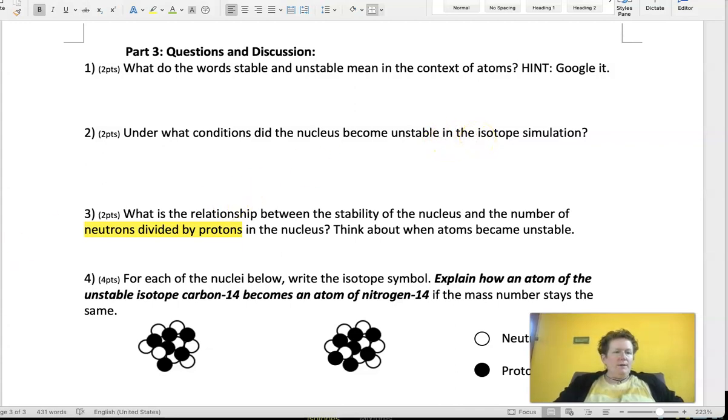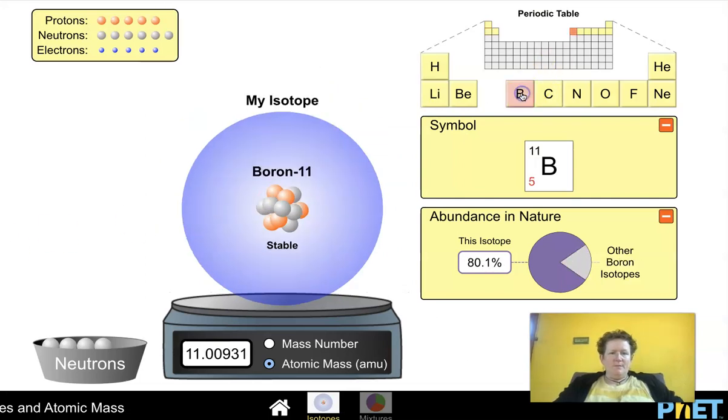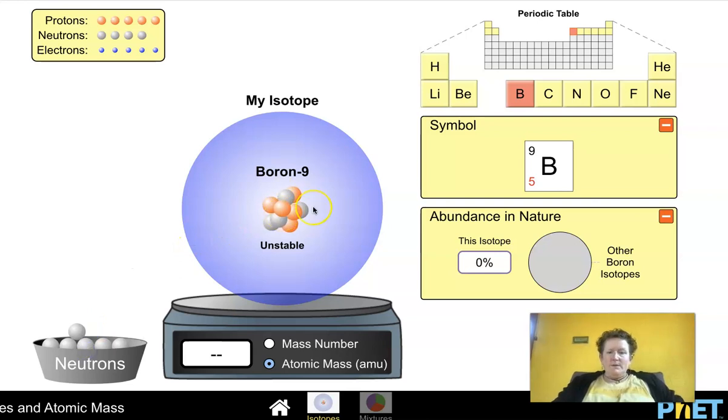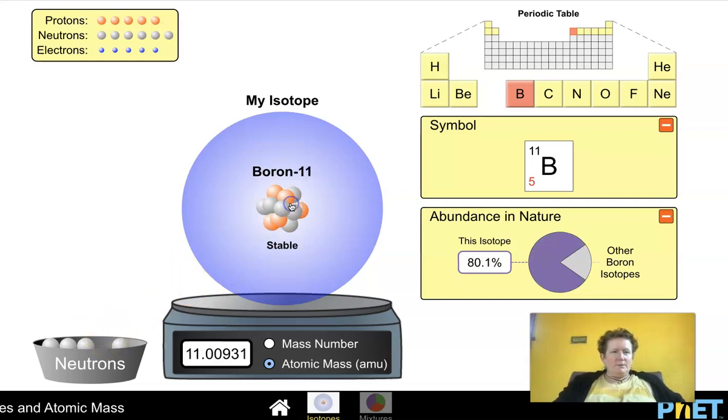Under what conditions did the nucleus become unstable in the isotope simulation? Well, I just showed you how to make an isotope unstable. We can choose a different atom here. Boron's nice and stable, Boron 11. But if the protons and neutrons are equal, it's still pretty stable. But if I go so that the neutron to proton ratio is less than 1, so there's not a neutron for every proton, it becomes unstable. I can also make it unstable by adding too many neutrons. If I put too many more neutrons than protons, it becomes unstable.